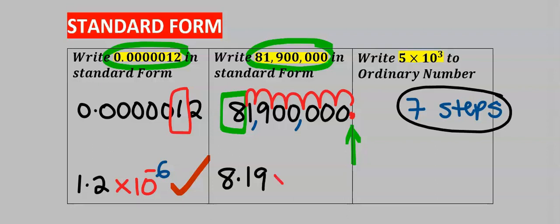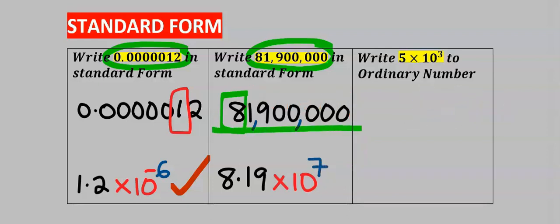Next, we're going to multiply this by 10 and write the number of steps at the power of 10 — here it is seven. And because this is a large number, this seven will remain positive, and this is our answer.